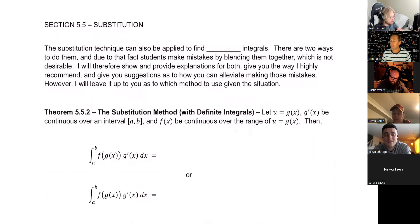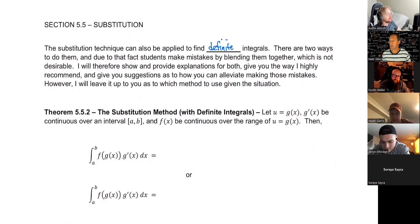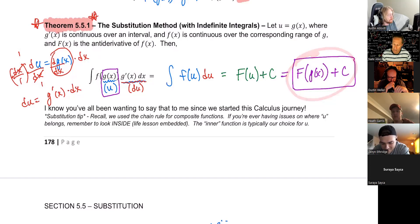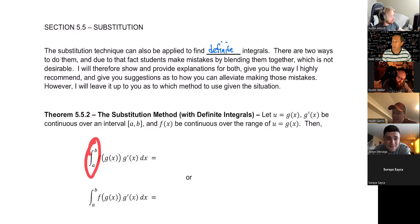The next part is substitution with definite integrals — definitely. Very good, Dustin — which means it is defined over some interval. That means we are not just going to find the antiderivative; we're actually going to find the area under the curve from A to B.